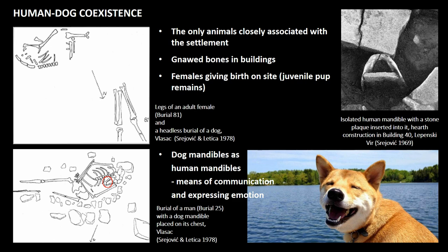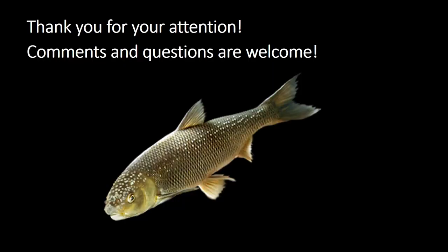communication. As Juliet Clutton-Brock writes, some of the sounds dogs make — like barking, yapping, and baying — are not sounds produced by wolves in the wild; they are a product of cohabitation with humans. Also, smiling dogs with their upturned mouths perhaps simulate human facial mimicry. So perhaps the choice of dog mandibles in this case has been similar to using human mandibles as a means to communicate. I'm aware that I'm past my time, so I would like to thank you for your attention — any questions or comments are welcome, thank you.